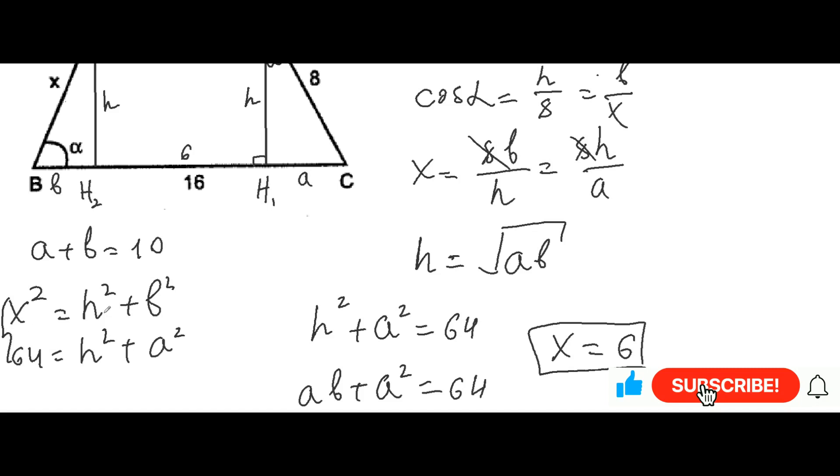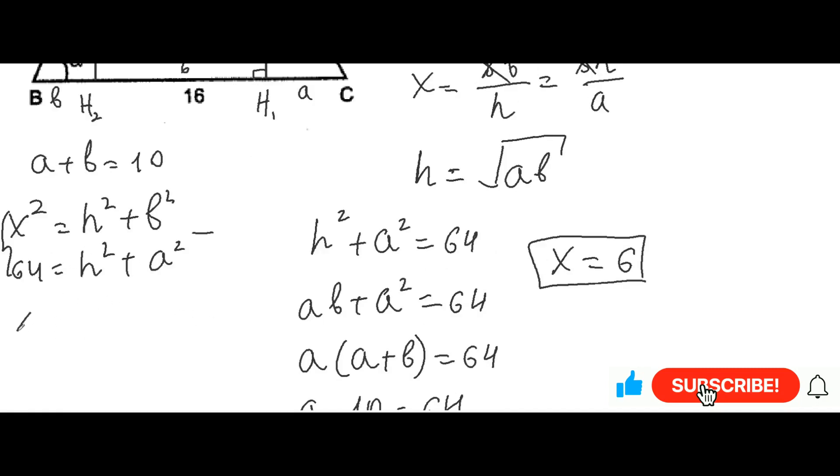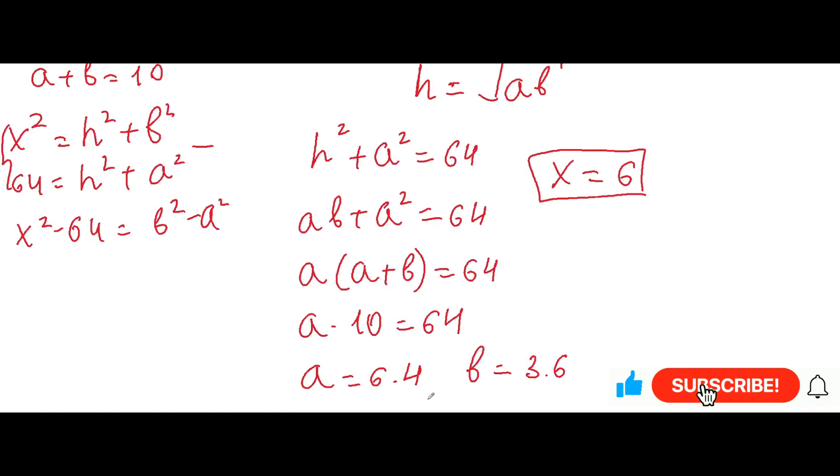Now we can subtract these two equations and we can get that x squared minus 64 will be equal to b squared minus a squared. Now we can plug instead of a and b these values and get the answer 6.